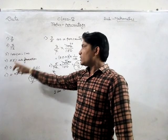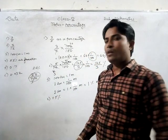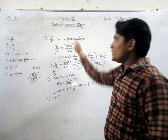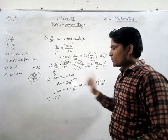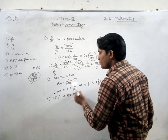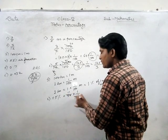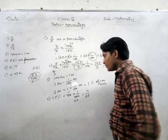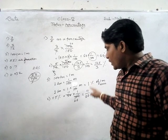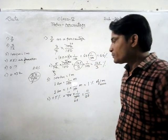Now the question is converting a percentage value into a fraction. The question is 55 percent - convert it to a fraction. After removing the percentage symbol, we divide by 100. So 55 upon 100 simplifies: 5 goes into 55 giving 11, and 5 goes into 100 giving 20. So 55 percent as a fraction is 11 upon 20. That means 11 by 20 is equal to 55 percent of any number.